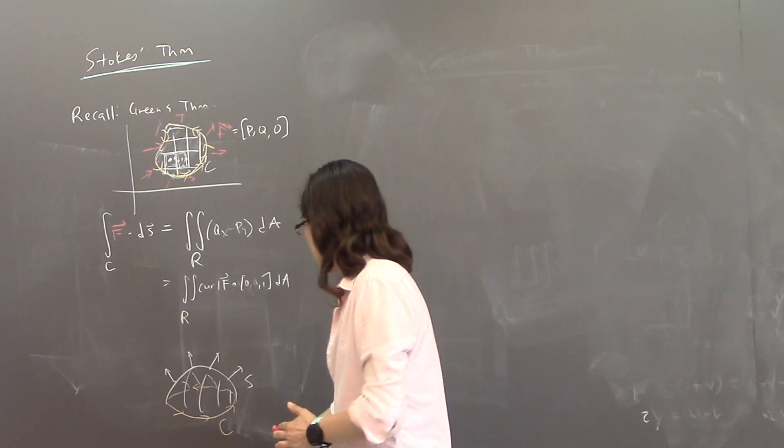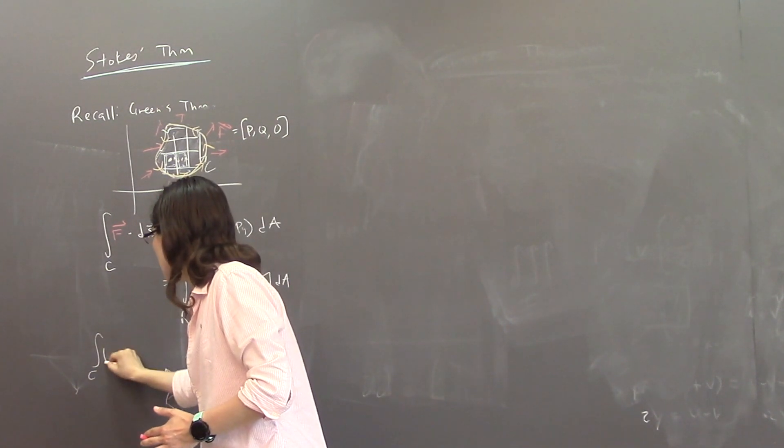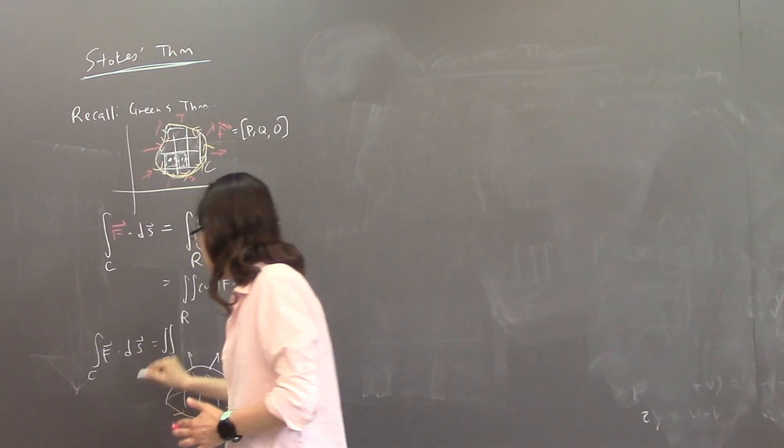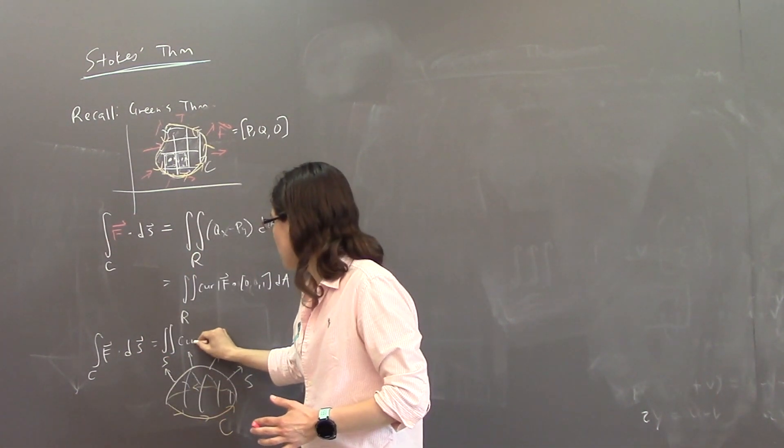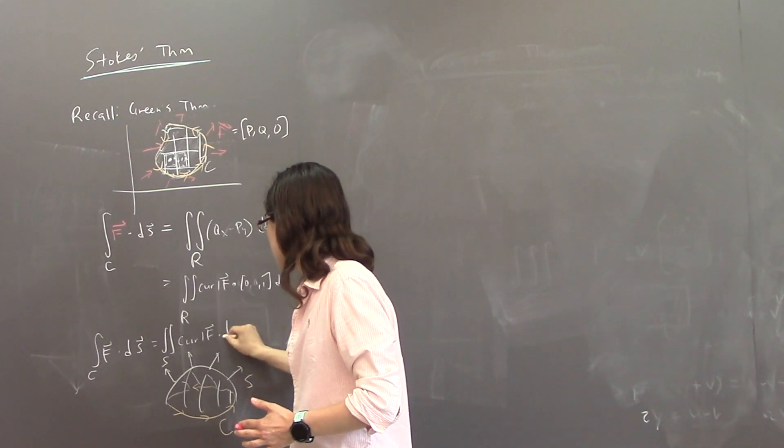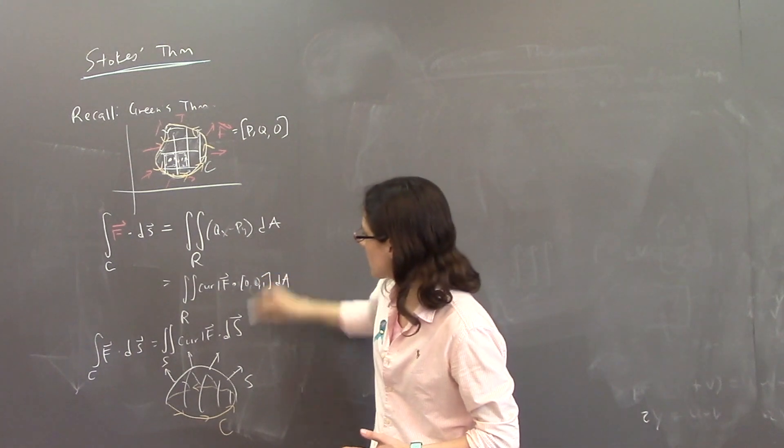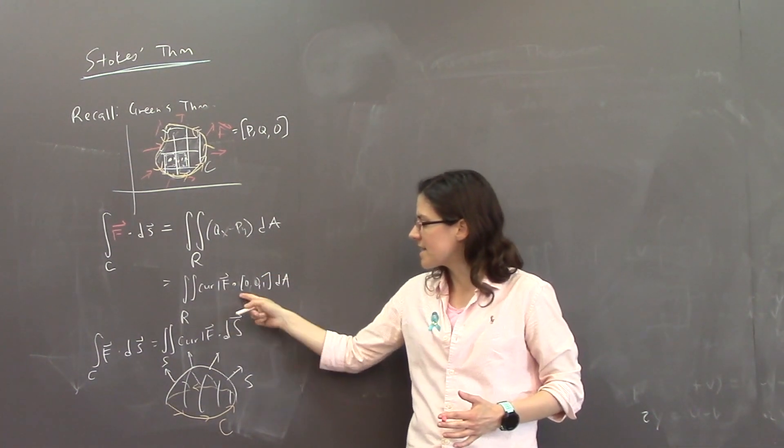if you have this oriented boundary curve C and you orient your surface S going out, then the vector line integral over C of F dot D little s is equal to the surface integral over S of the curl of F dot D S.